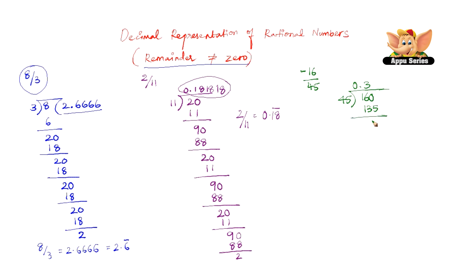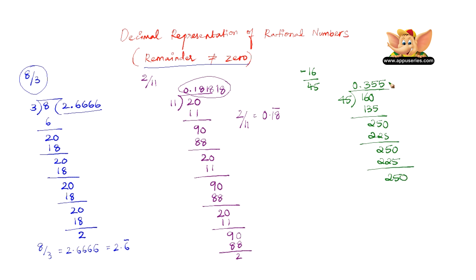The remainder is 25, which is not divisible by 45, so add another 0. 45 times 5 gives 225; remainder is 25 again, not divisible by 45. Add another 0 — 45 times 5 gives 225, remainder 25 again. This goes on and on, clearly not going to end.